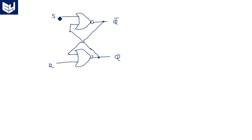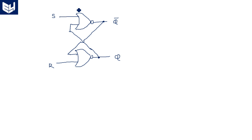You can also take R in the first gate and S in the second gate; then the outputs will be Q and Q-bar in the normal way. If you don't want to change the output terms Q and Q-bar, you have to change the inputs accordingly. S is directly connected to output Q-bar and R is connected to output Q. If you change this order you will get mistakes in the output calculation.